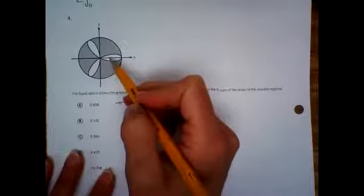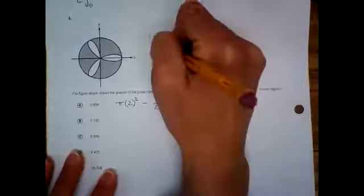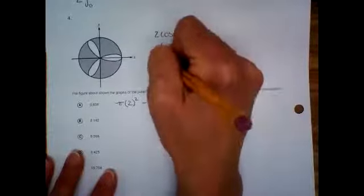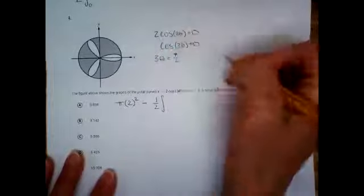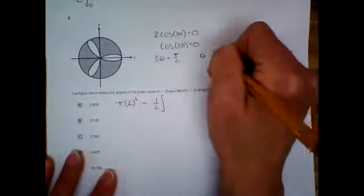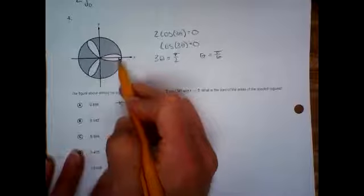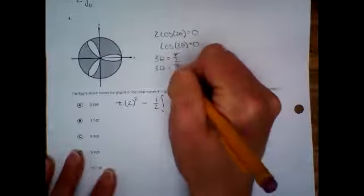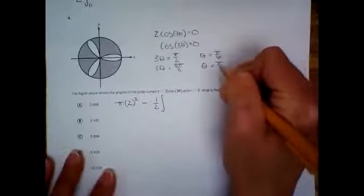We want to set it equal to zero and see how long it takes to go the whole way around. We're going to take two cosine of three theta, set it equal to zero — which would just be cosine of three theta equals zero if you divide over the two. Cosine equals zero at pi over two, so that gives us theta equals pi over six when you divide by the three. The next place cosine is zero is three pi over two; divide by three gives pi over two — the threes cancel.